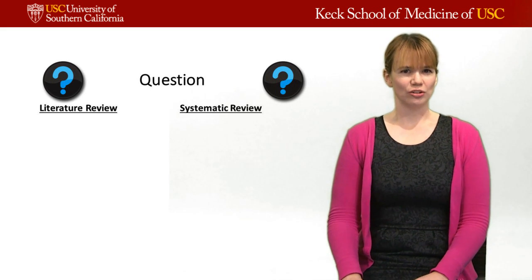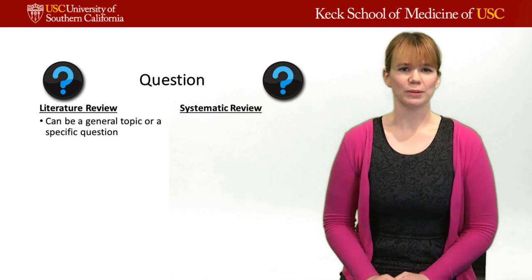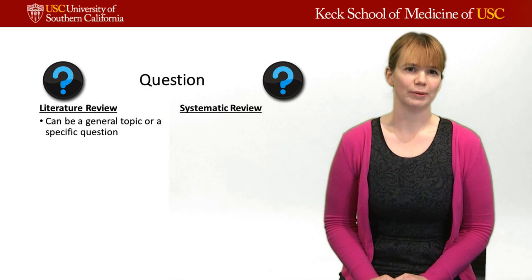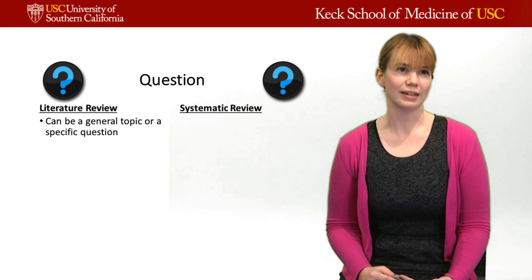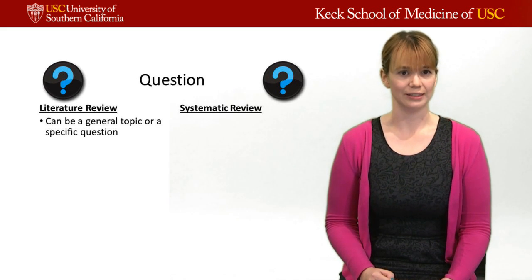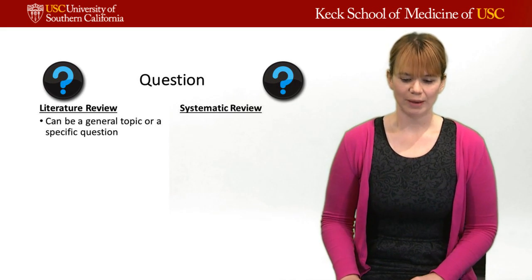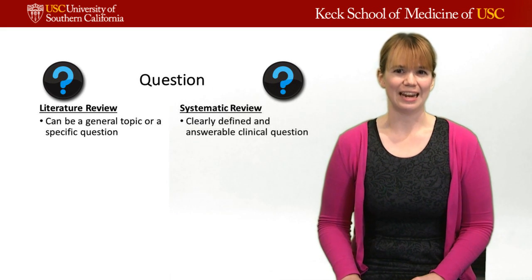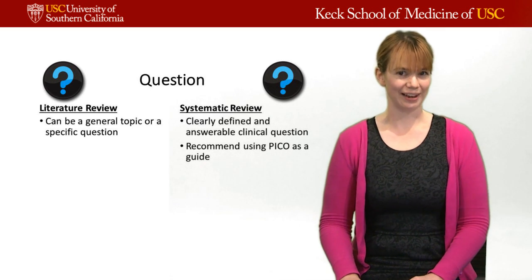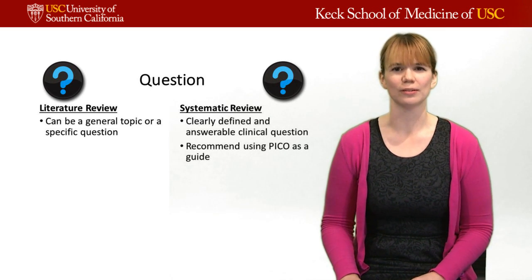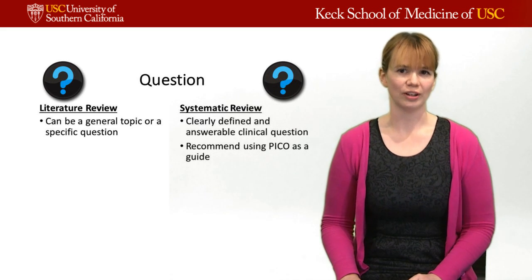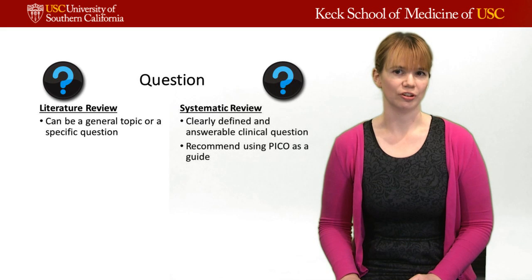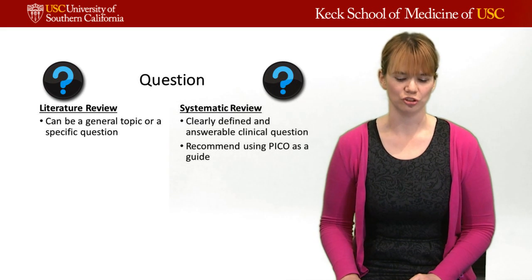The question you use at the beginning matters. With a literature review, it doesn't have to be that specific — it can be a general topic like 'type 2 diabetes treatment among teenagers.' Whereas a systematic review needs to be a clearly defined and answerable clinical question, and we really encourage people to use PICO as a guideline: Patient or Problem, Intervention, Comparison, and the Outcome you're trying to achieve.